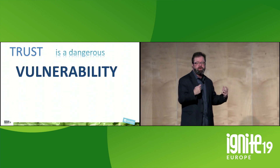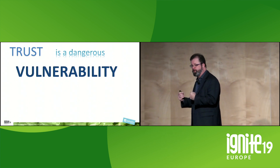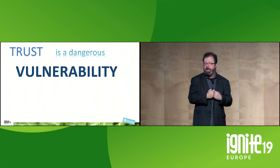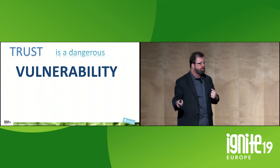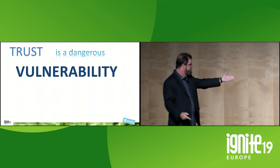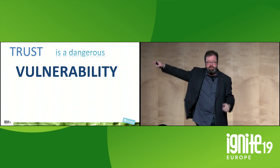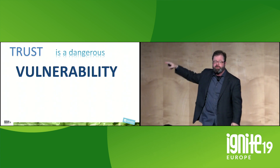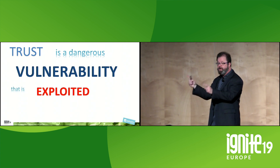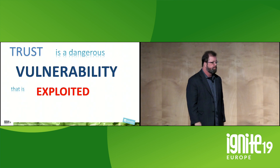You must understand this: trust is a vulnerability. It is something that people are going to do bad things for. What do you do with vulnerabilities? You mitigate them. You've got to get rid of those vulnerabilities, and this is the worst one. The reason it's the worst one is because it's the only vulnerability in the world that is also its own exploit at the same time.